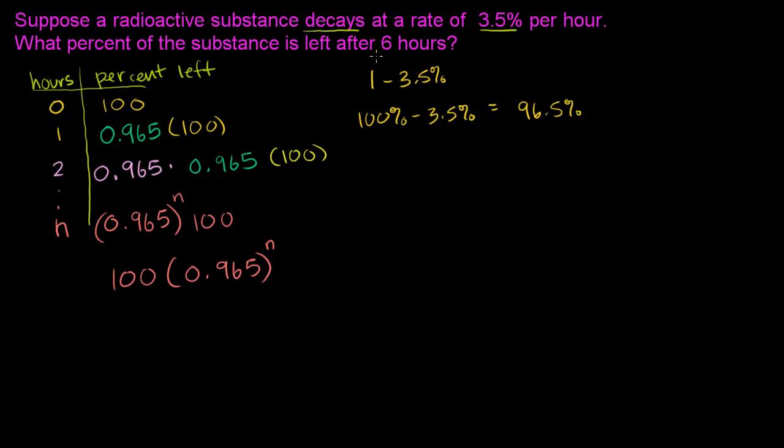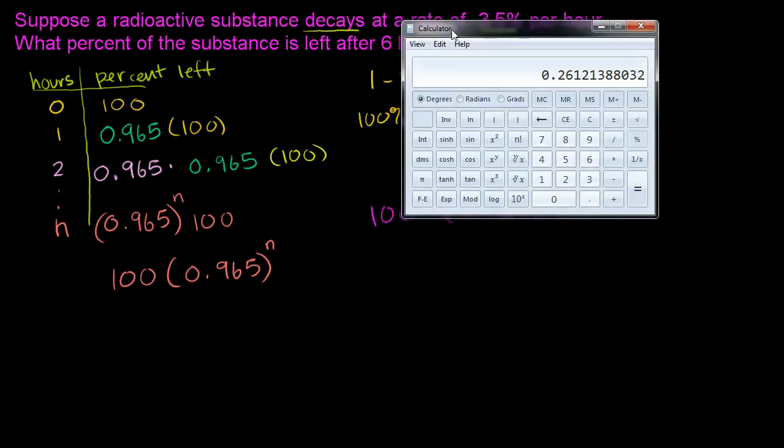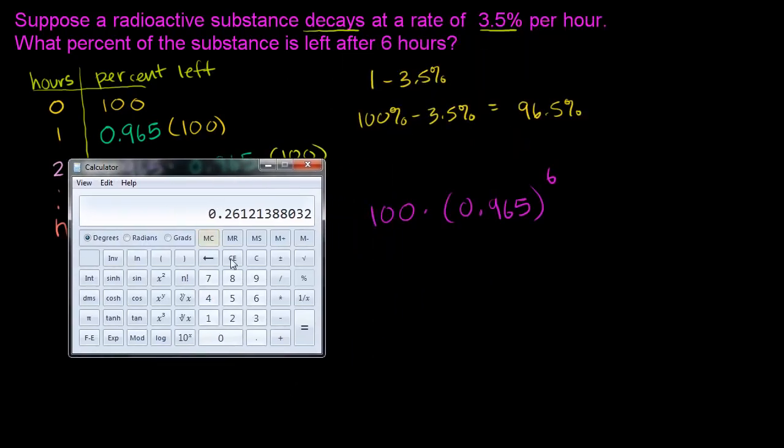Well, now we can answer the question. After six hours, how much are we going to have left? Well, we're going to have 100 times 0.965 to the sixth power left. And we could use a calculator to figure out what that is. Let's use our trusty calculator.